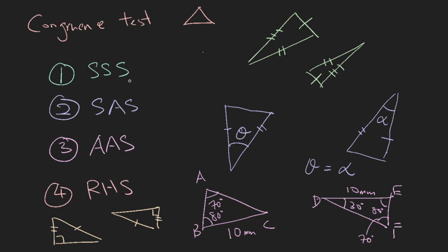To summarize, you need to remember these four rules. For two triangles to be congruent, they must satisfy one of: all three sides the same (SSS), two sides and the included angle the same (SAS), two angles and the corresponding side the same (AAS), or the hypotenuse and another side of a right-angle triangle the same (RHS). This is known as congruence testing.